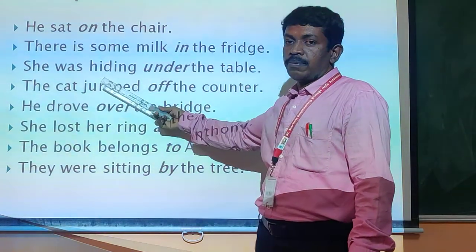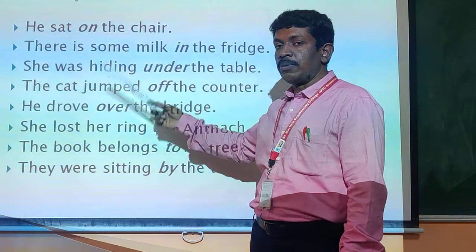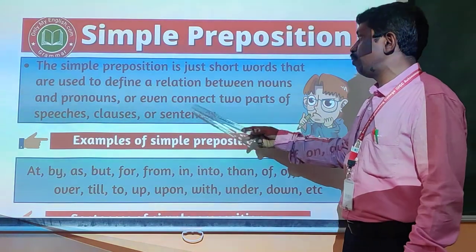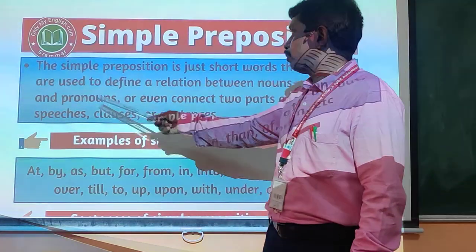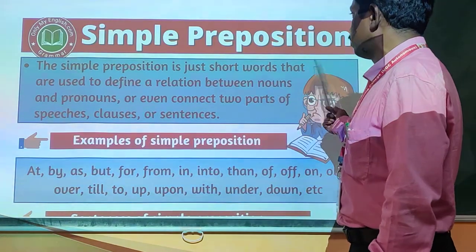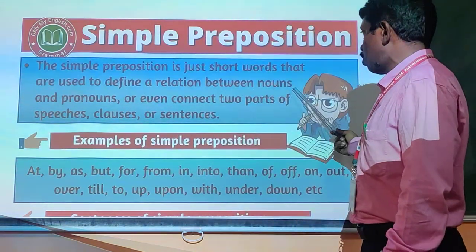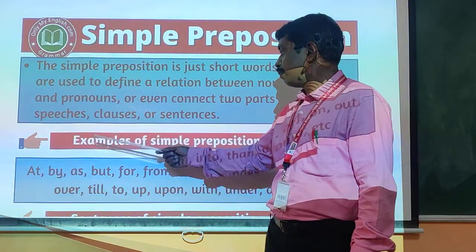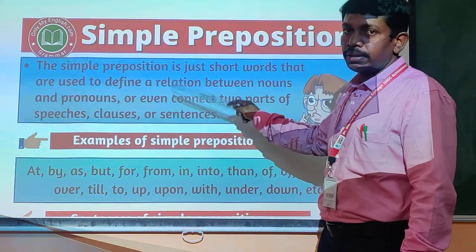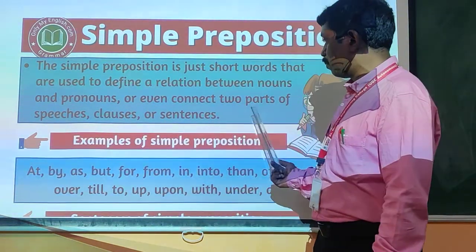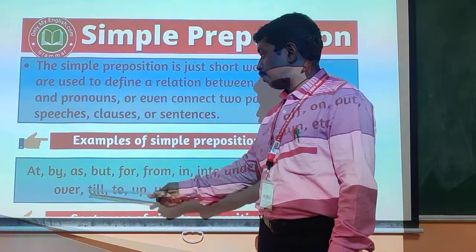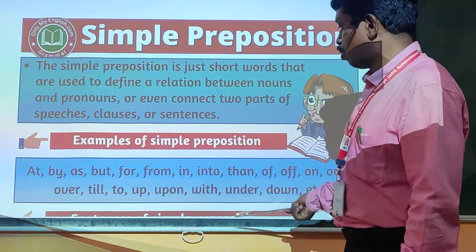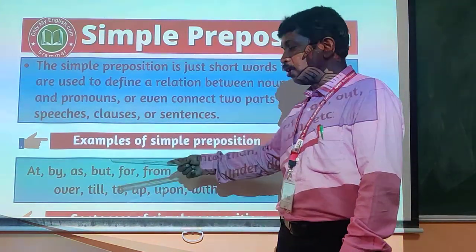There is not much difficulty with simple prepositions. The definition of simple prepositions is: simple prepositions are just short words that are used to define a relation between nouns, pronouns, or even connected to parts of speech and clauses. Examples of simple prepositions include: a, by, as, but, from, into, then, on, out — all these are simple prepositions.